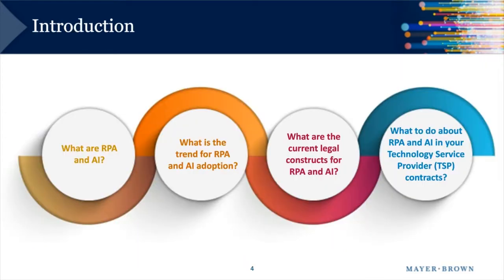Our discussion today will cover four key topics. First, we're going to talk about what robotic process automation, or RPA, and artificial intelligence actually are and give some examples of how they're used in practice. Then we'll discuss the trend for adoption of these technologies in the financial services industry. Third, we'll talk about the challenges in applying current legal constructs to RPA and AI. And finally, what do these technologies mean in terms of your technology service provider contracts — how do you contract for RPA and AI in your vendor agreements?